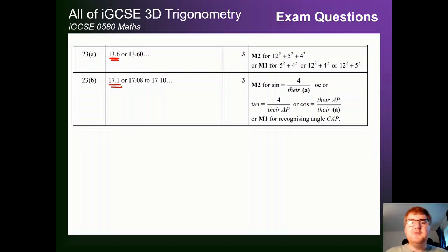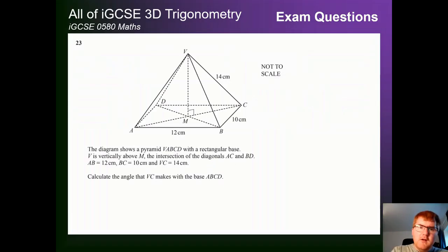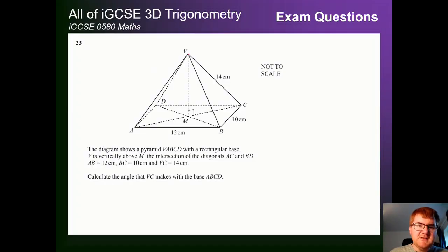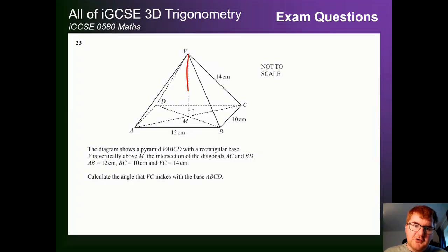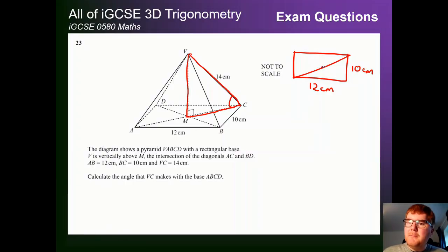So the two answers are 13.6 centimeters and 17.1 degrees. If you're enjoying the content, please think about liking and subscribing — there's always tons of IGCSE content coming out, particularly as exams approach. On to question 3, very similar to a question we've already seen but with a slight difference. We have a pyramid with a rectangular base; V is vertically above. This time we don't know the height but we do know the diagonal side of 14 centimeters, and we want to find the angle that VC makes with the base.